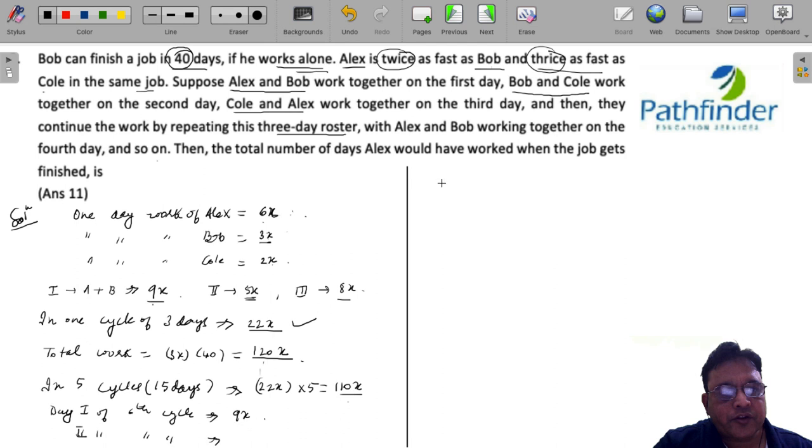So the total days for which the work lasts is 5 into 3, 15 plus 2, 17.